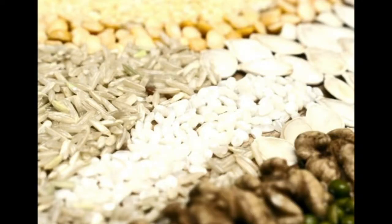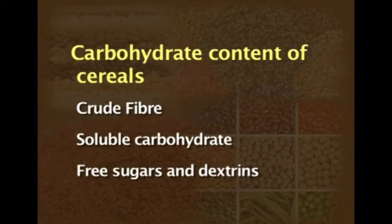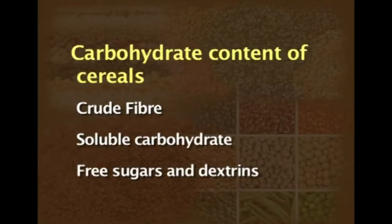Coming to energy and carbohydrates: cereals are mainly made up of 80% carbohydrate, divided into two components — crude fiber and soluble carbohydrate. The soluble carbohydrate is mostly made up of starch. Apart from soluble carbohydrate and crude fiber, there are certain amounts of free sugars and dextrins found in cereals. The starch component is mostly concentrated in the endosperm, with very little amount in the form of sugars found in the germ layer.